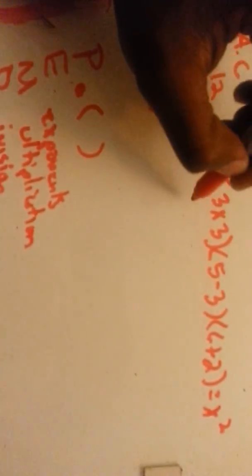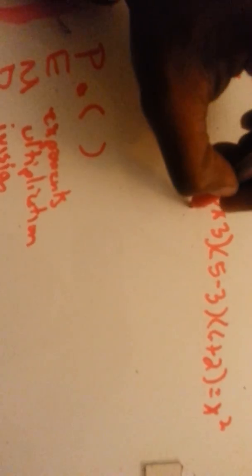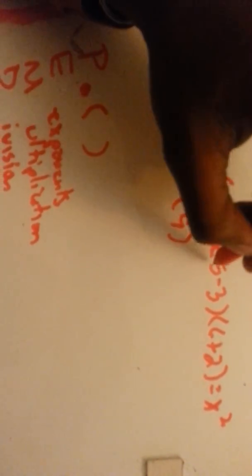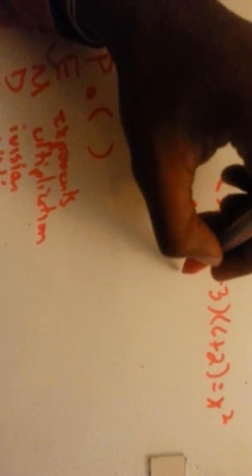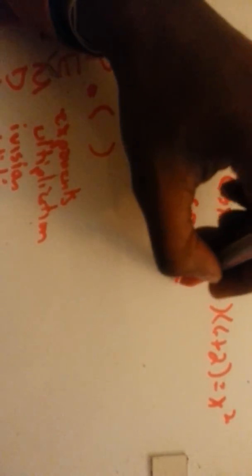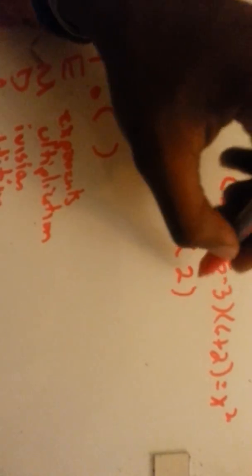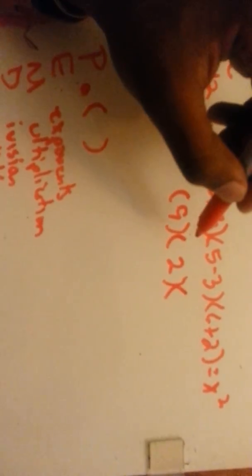So what we need to do is do what's inside the parentheses first. 5 minus 3 would be 2, and 6 plus 2 would be 8. So we have equals x squared.